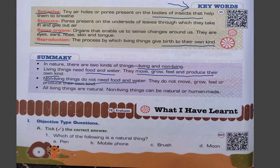Summary: in nature there are two kinds of things — living and non-living. Living things need food and water; they move, grow, feel, and produce their own kind. Non-living things do not need food and water; they do not move, grow, feel, or produce their own kind. All living things are natural, whereas non-living things can be natural as well as man-made. Exercise question 1: which of the following is a natural thing — pen, mobile phone, brush, or moon? Moon is a natural thing, so option D is correct.